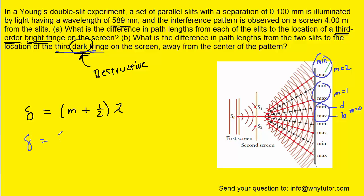So when we plug in, we have to be careful to plug 2 in for m, not 3. And then we'll also put the wavelength of 589 in. And this works out to be 1.47 times 10 to the third nanometers.